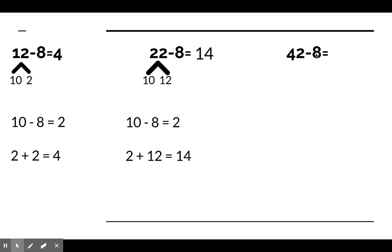Let's explore 42 subtract 8. Remember, we're going to break this into two parts. One part has to be 10, because we're using the take from 10 strategy. When I take 10 out of 42, that leaves me with 32 remaining.